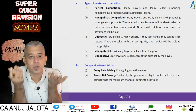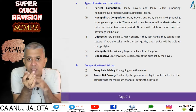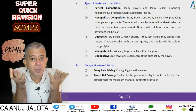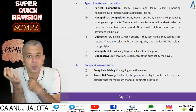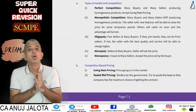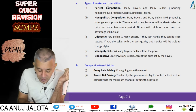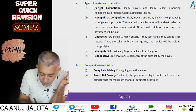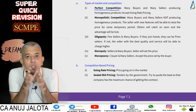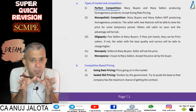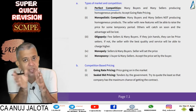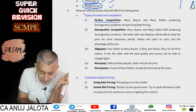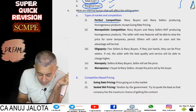Given a choice, I'd like to have my selling price as high as possible, but somebody should also be buying that product. That depends on many external things. First is the type of market. In perfect competition, there are many buyers and many sellers producing almost similar products. No single seller can fix a high price because customers will simply buy from competitors. So you accept going rate pricing.